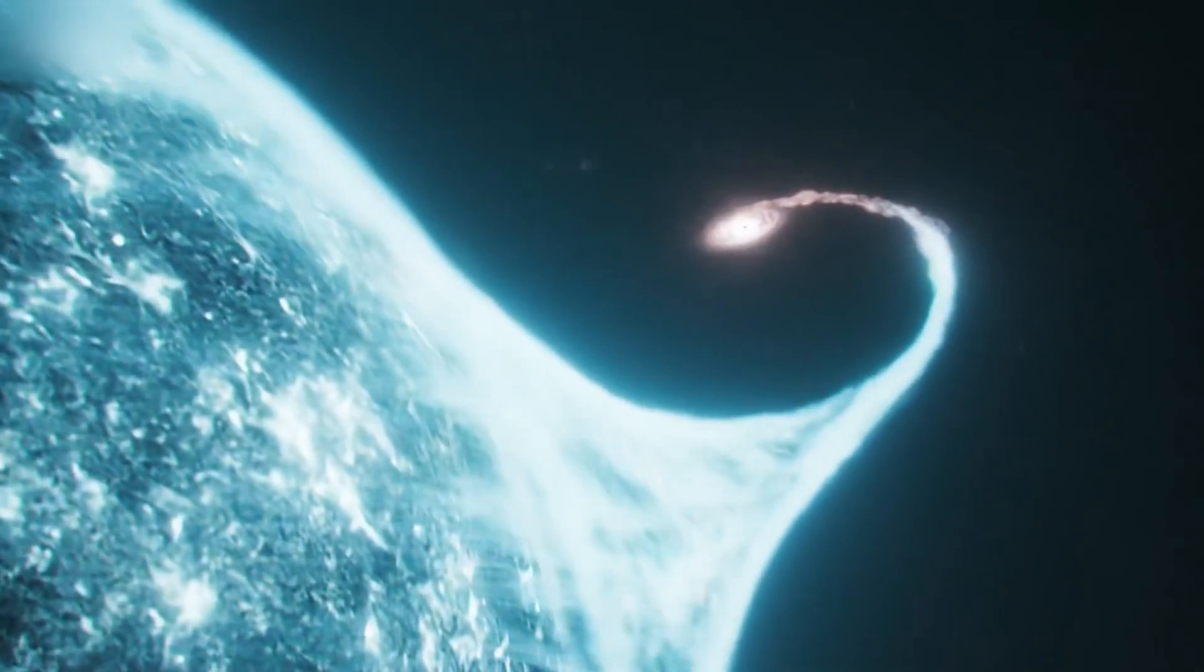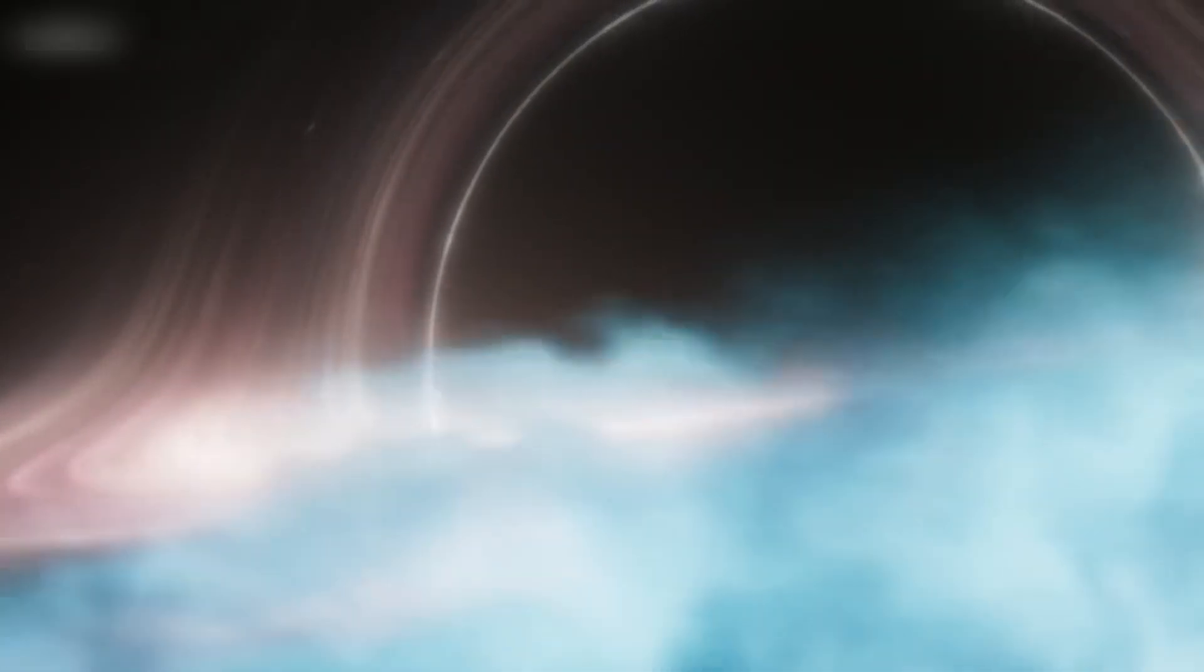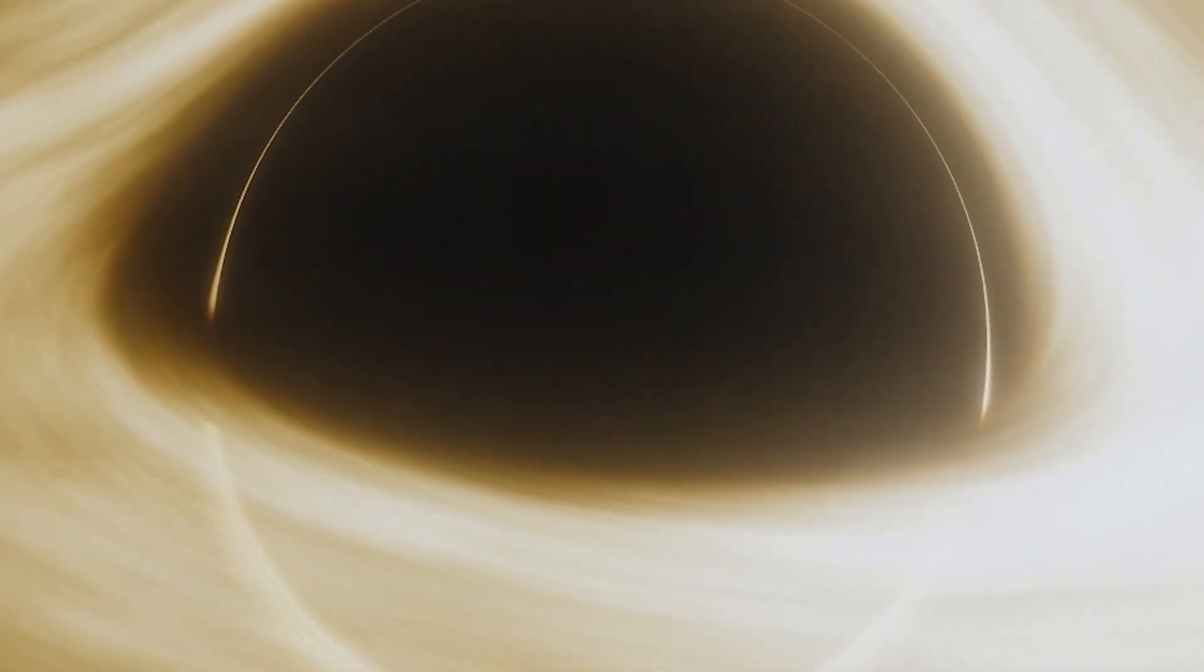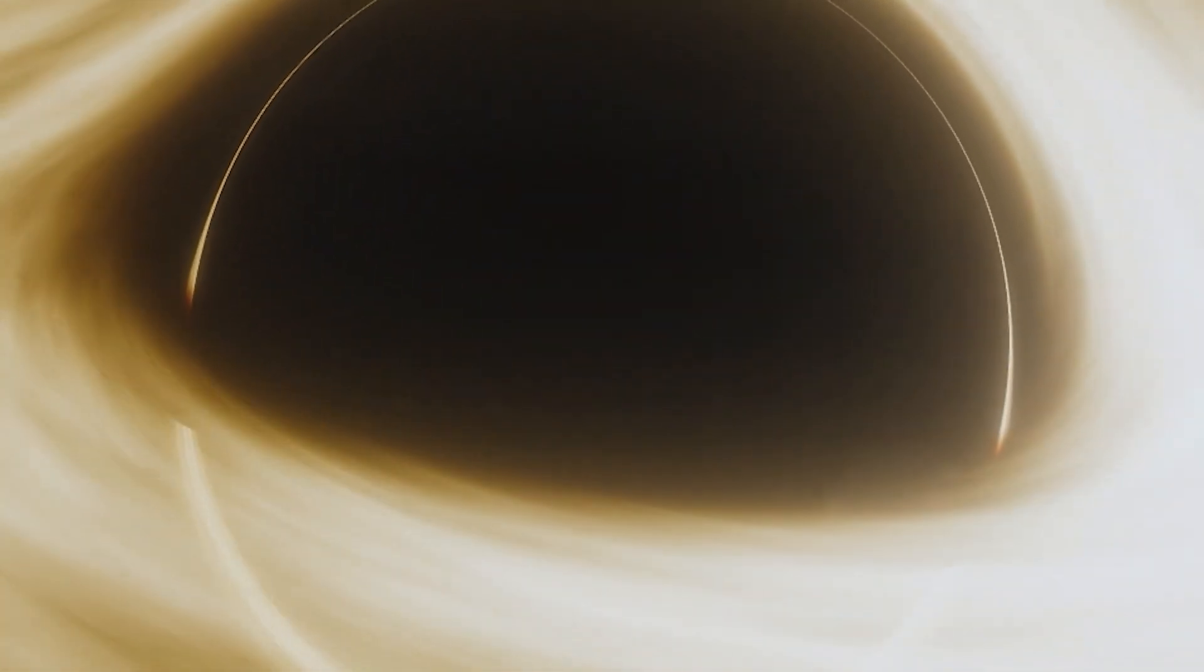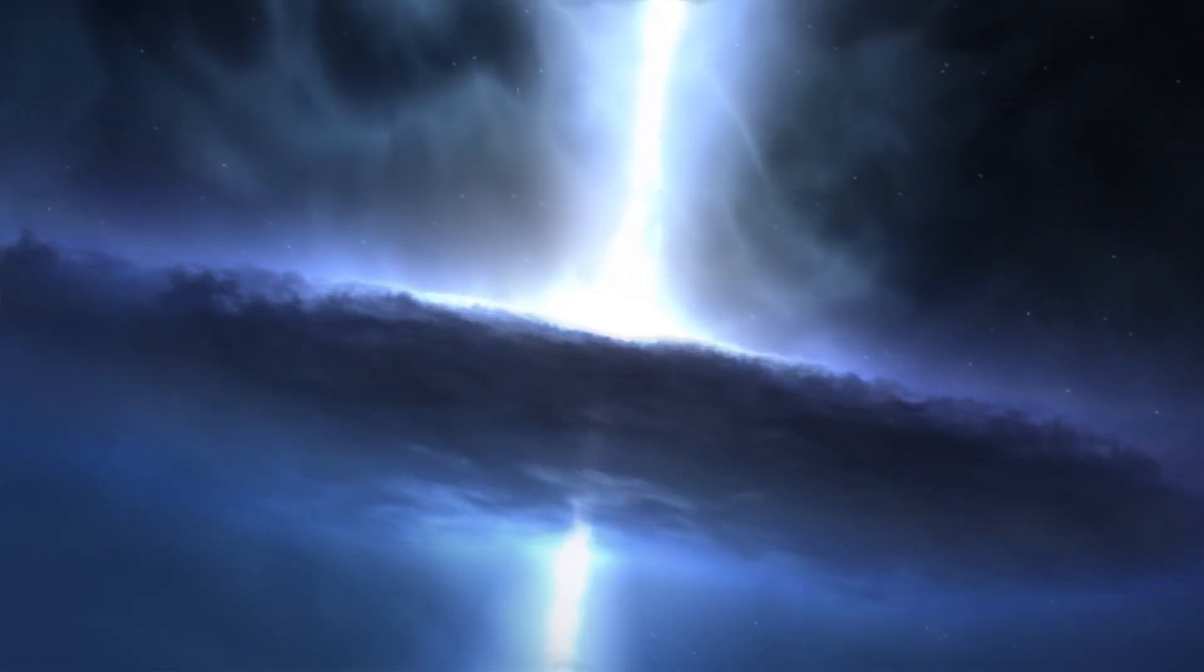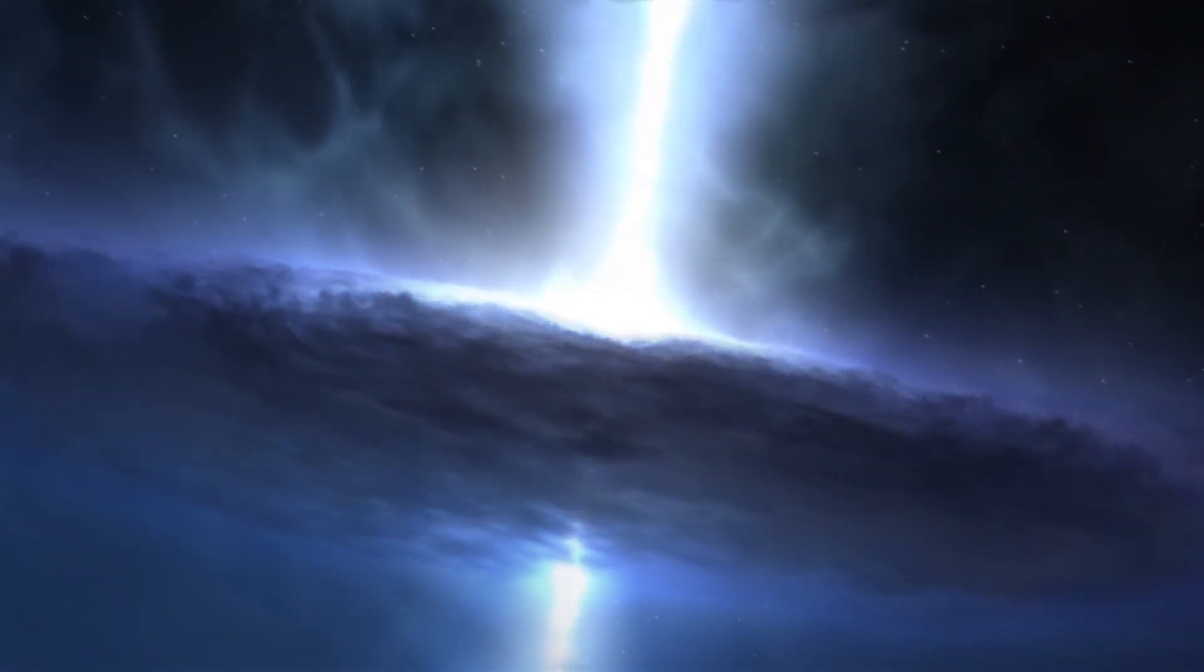The gravitational allure of black holes is so powerful that it drags in surrounding matter, such as gas, dust, and even other stars, forming an accretion disk. This swirling disk of superheated matter orbits the black hole before succumbing to its grip. Black holes can also unleash mighty jets of particles and radiation, showing the oddity of our universe.